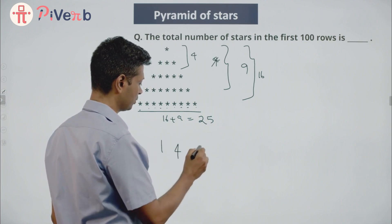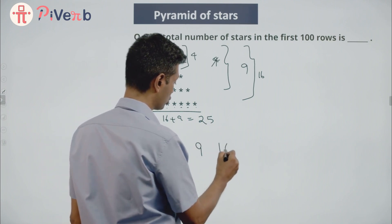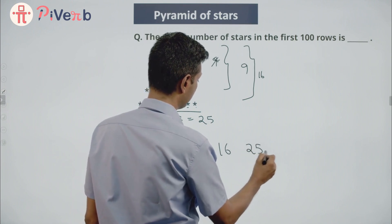1 row is 1, 2 rows is 4, 3 rows is 9, 4 rows is 16, 5 rows is 25.